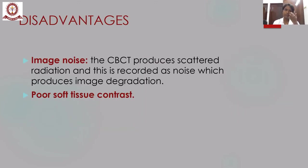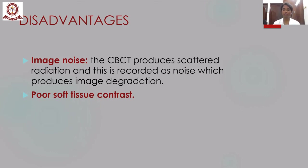There are very few disadvantages for CBCT. One is image noise: CBCT produces scattered radiation recorded as noise, causing image degradation. This scattered radiation is produced because of the cone-shaped beam generating divergent rays. The other disadvantage is poor soft tissue contrast because of the reduced radiation exposure — soft tissue contrast is directly proportional to the radiation given to the patient, so the higher the radiation the better the soft tissue contrast.